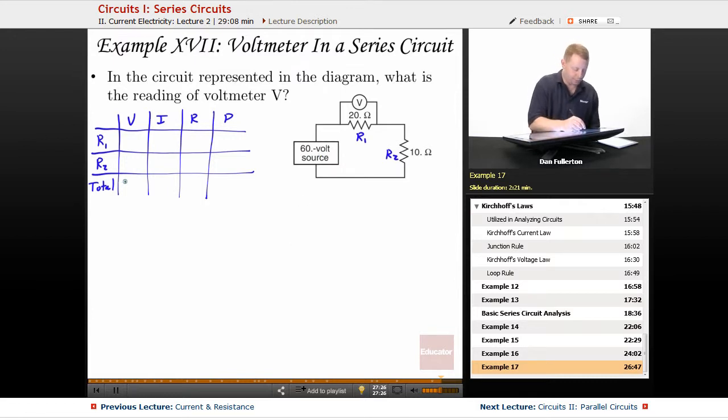We have a 60 volt source, so there's our total. We know that R1 is 20 ohms. We know that R2 is 10 ohms. So, once we've done that, we know that the total resistance in our circuit is the sum of the individual resistances because it's a series circuit, 30 ohms.